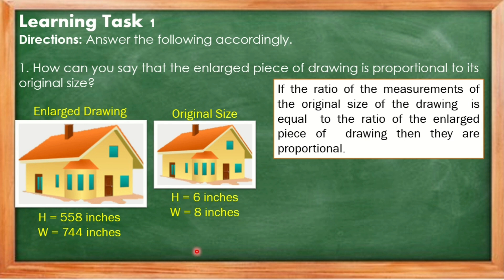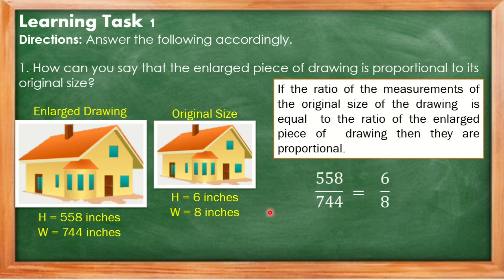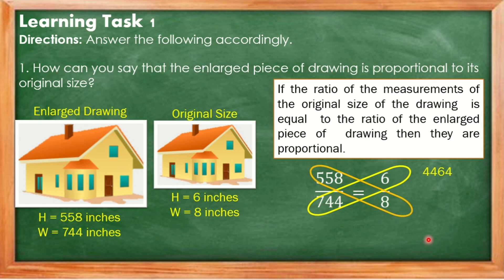Let us check if the ratio of measurements of the original size drawing and the enlarged drawing are equal. The enlarged drawing has a height of 558 inches and a width of 744 inches. The original size drawing has a height of 6 inches and a width of 8 inches. We get the product of the means: 744 times 6 equals 4,464. Then the product of the extremes: 558 times 8 equals 4,464. Since the products are equal, they are proportional.